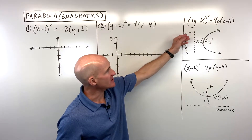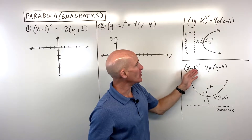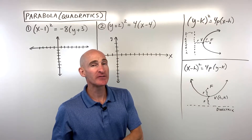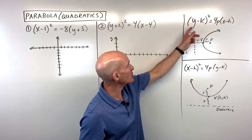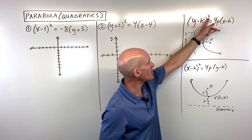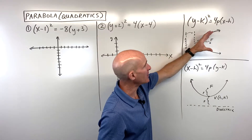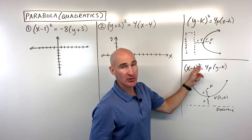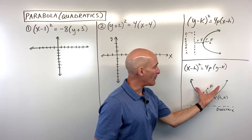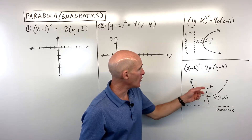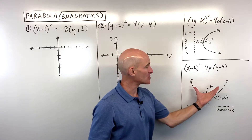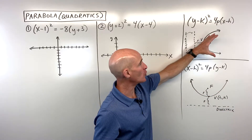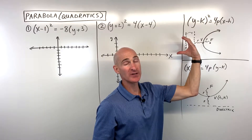When you're working with parabolas or quadratic equations of these two forms, you want to pay attention to which variable is squared. If y is squared, the parabola is going to be opening to the right or to the left. If it's the x term that is squared, it's going to be opening up or down. If the p value is positive, it opens up; if negative, it opens down. Same for the y-squared form: positive p opens right, negative opens left.